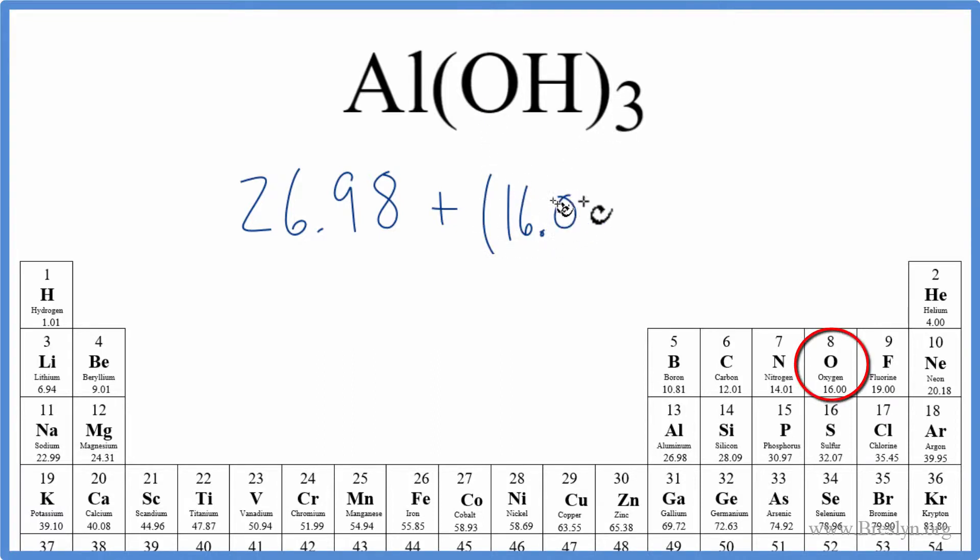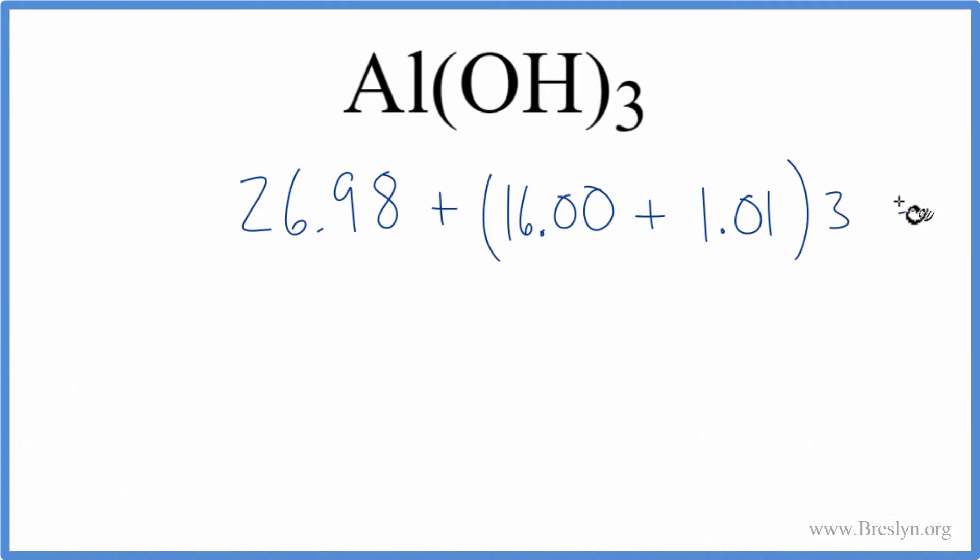Oxygen, 16.00 grams per mole, and the Hydrogen, 1.01 grams per mole. Close our parentheses and this 3 here, we'll multiply it by that. So we're going to add these up, multiply by 3, and then add this 26.98.